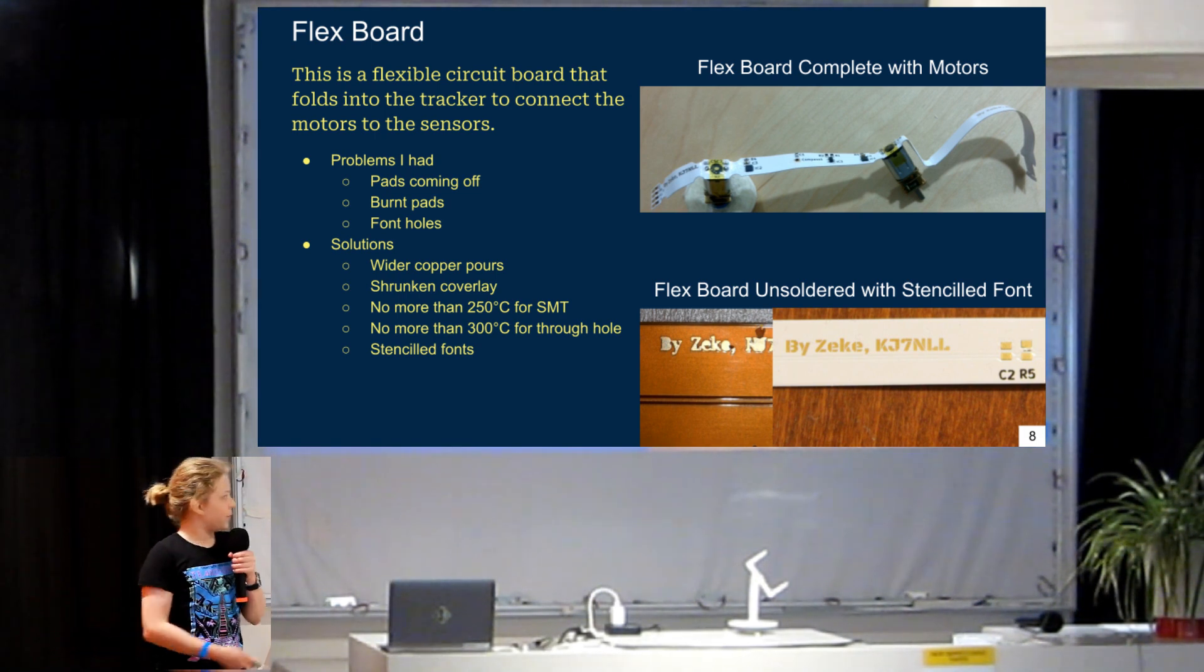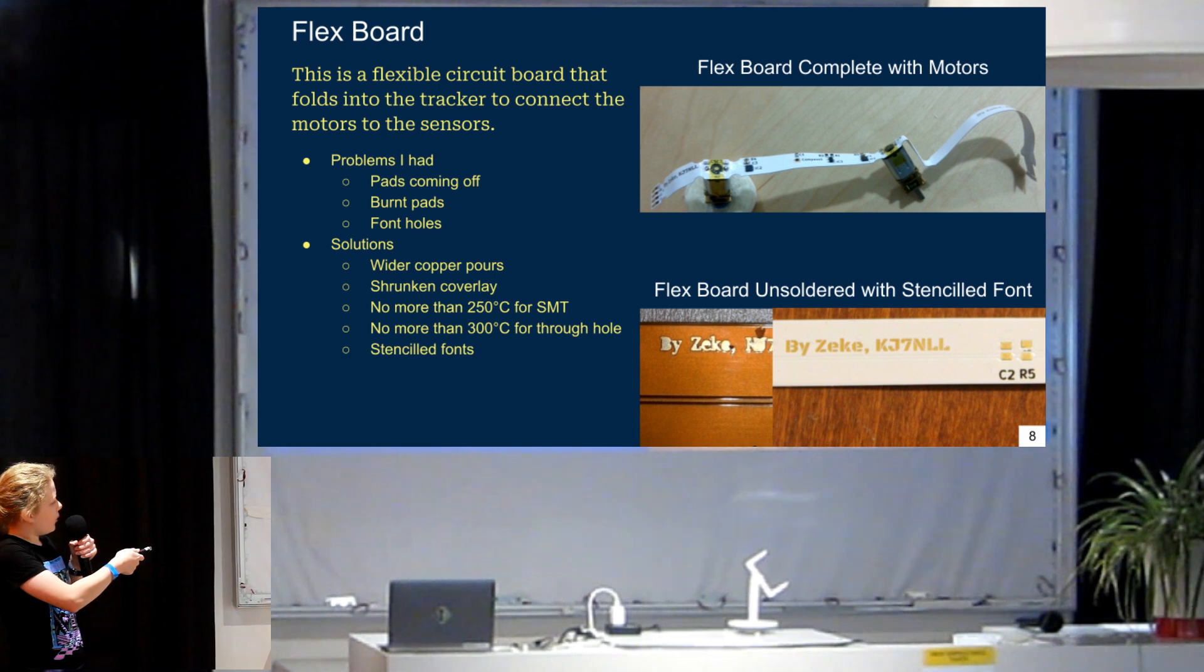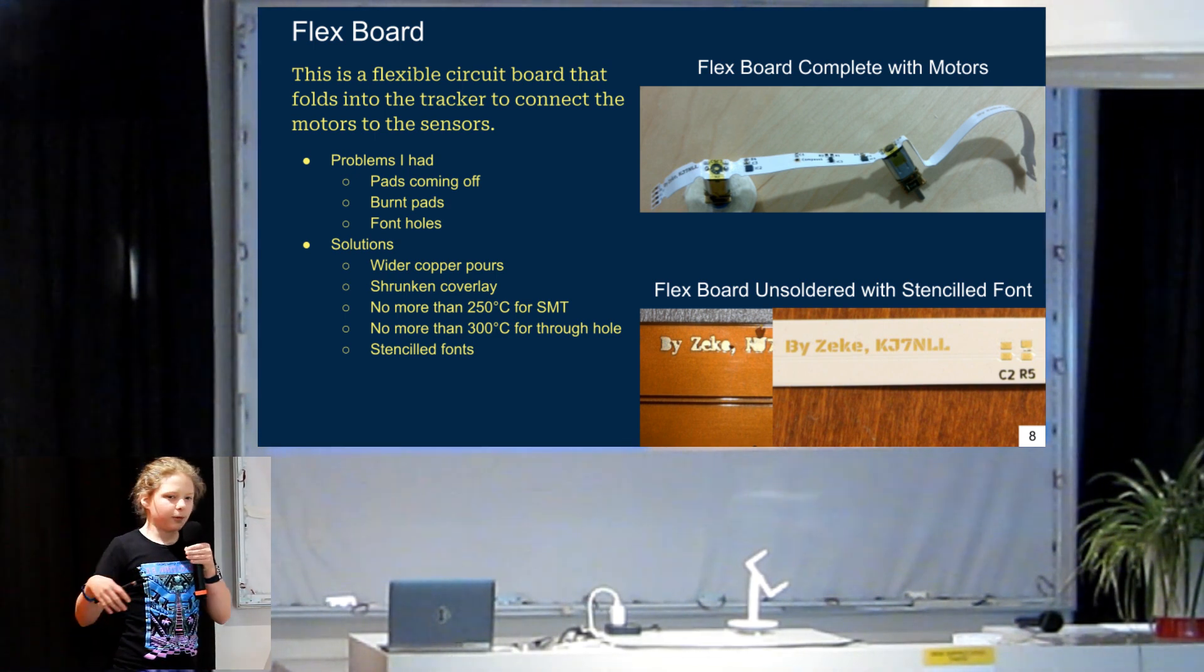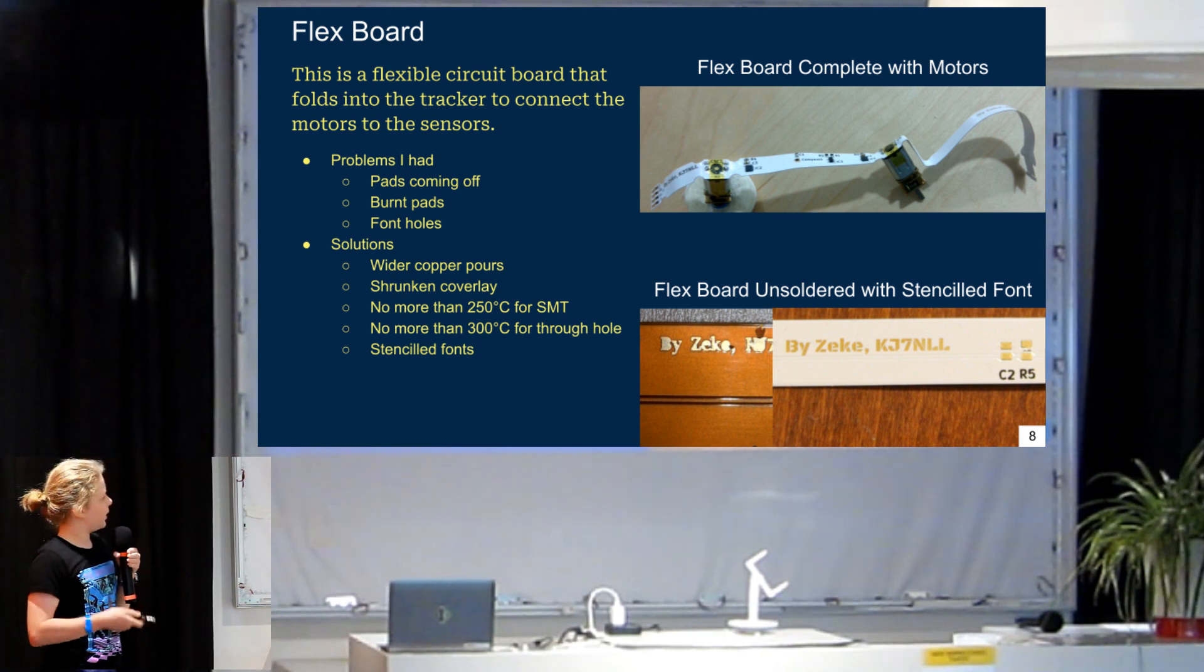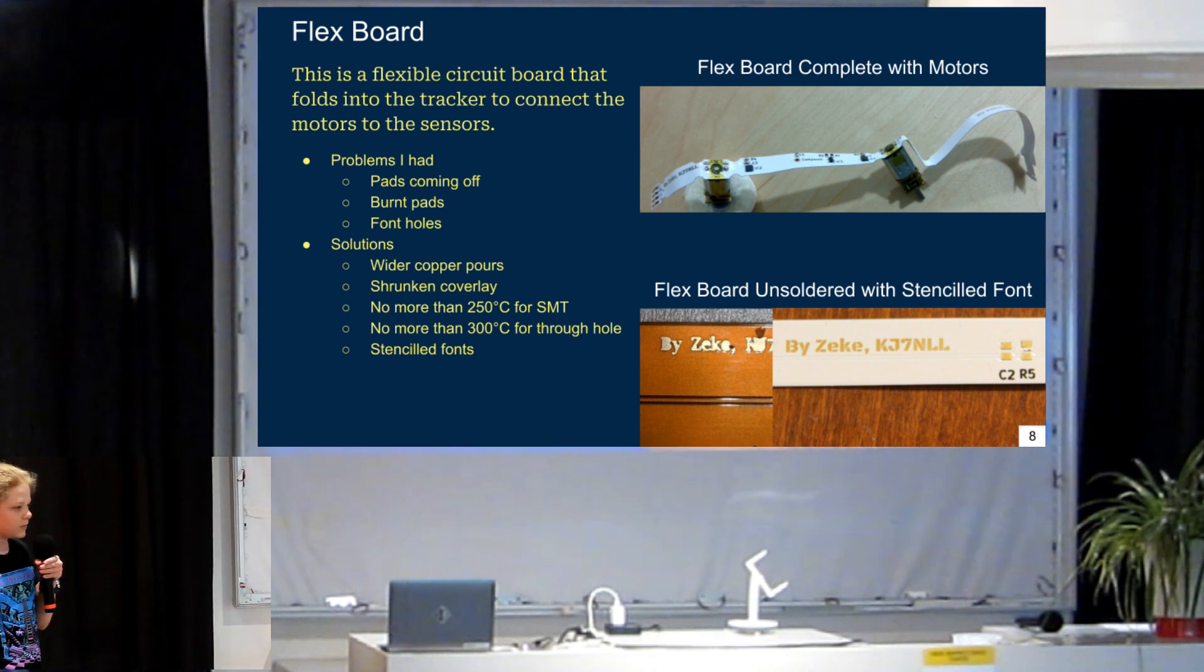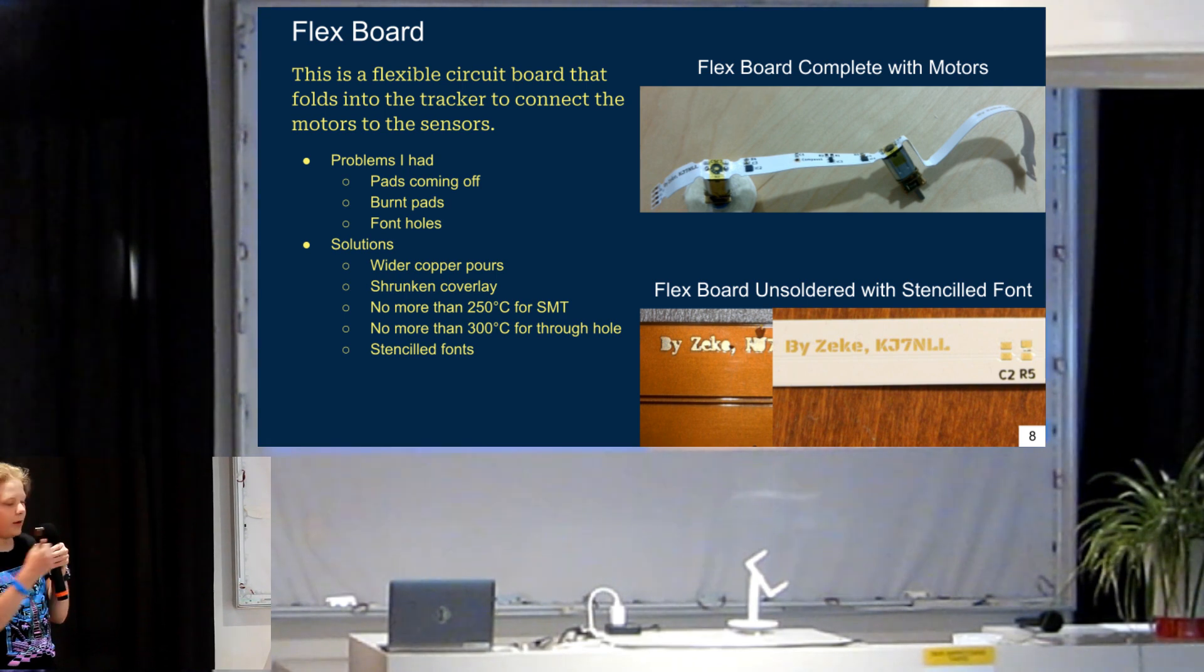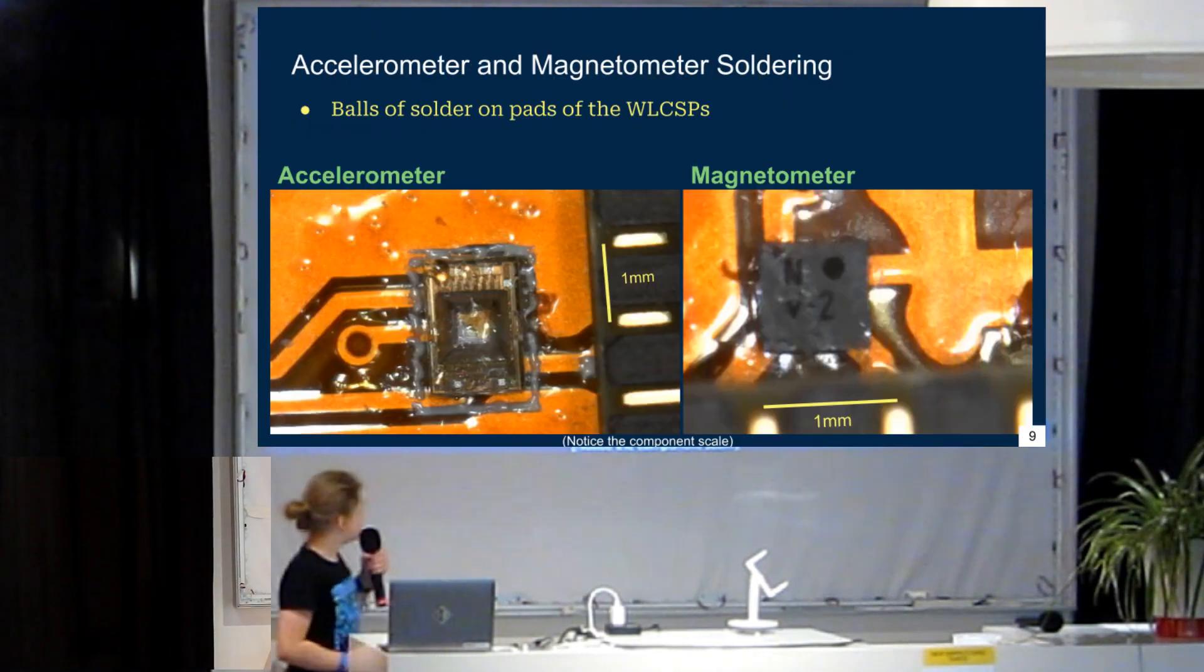And so, stenciled font. And so, these are the font holes. And notice how on my V1 circuit board, notice how it's a different color, we have all these fonts. But notice how there's no holes for the B or the E, and that's not on purpose. It's supposed to look like that, with all the holes. And this is because of the way that they put on the cover lay for flex boards. It's a separate piece, unlike traditional circuit boards. And so, anything that's not connected to the main piece of cover lay will just fall off. So, what I did is, I just used stenciled fonts, which connect the holes in the letters to the main piece of cover lay, and it works great. And then the holes don't fall off.